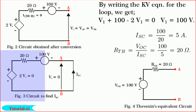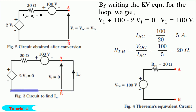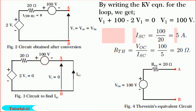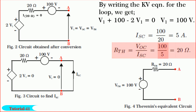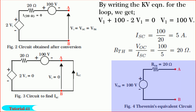To find I_SC, consider the network. Since the terminals A and B are short circuited, V1 equals zero and the voltage-controlled voltage source of 2·V1 also becomes zero. By writing the loop equation, I_SC is equal to 100 divided by 20, which gives us 5 amperes. Therefore, knowing VOC and I_SC, R_thevenin is equal to VOC divided by I_SC. By substituting the values, R_thevenin equals 20 ohm. Using V_thevenin and R_thevenin, the Thevenin's equivalent circuit across A and B is as shown in figure.